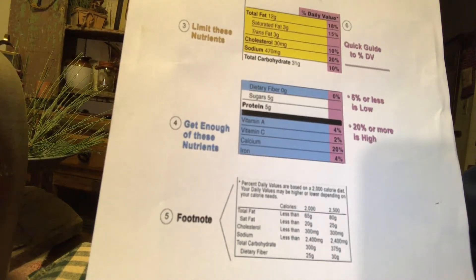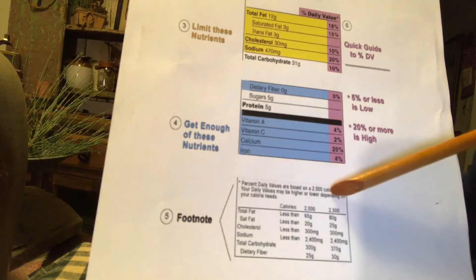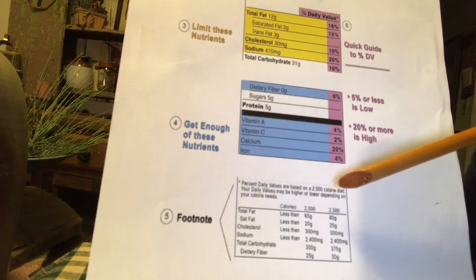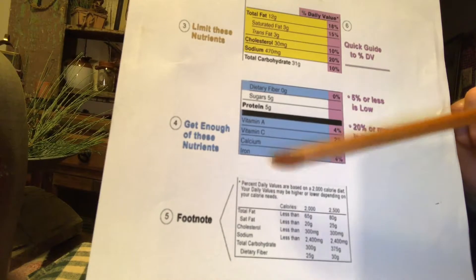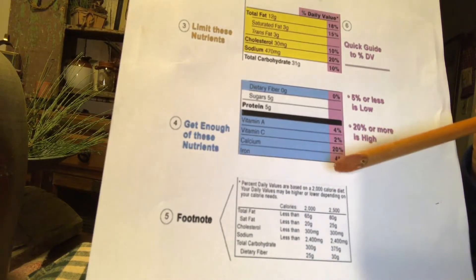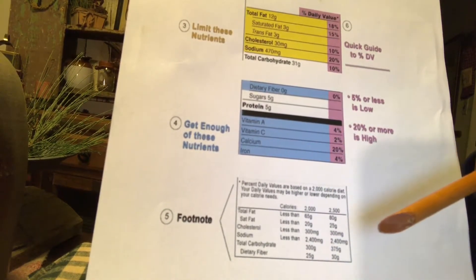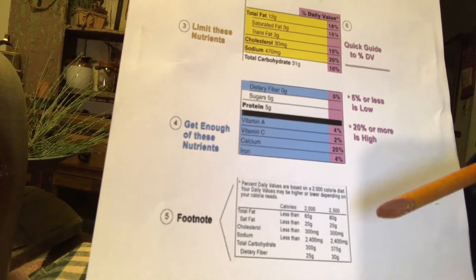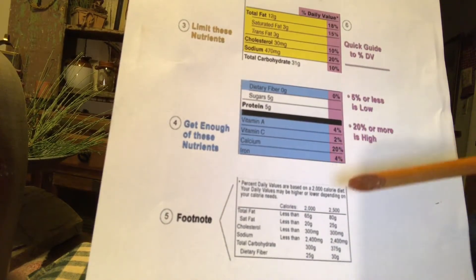And the footnote, depending on the size of the product, that's going to determine how large the label is. If the label needs to be small because it's a small product, you will only see this portion here.